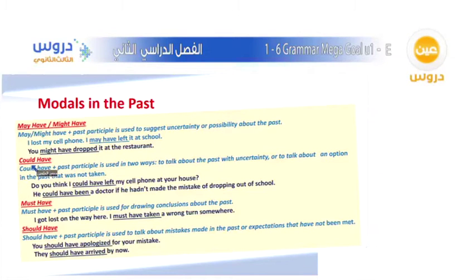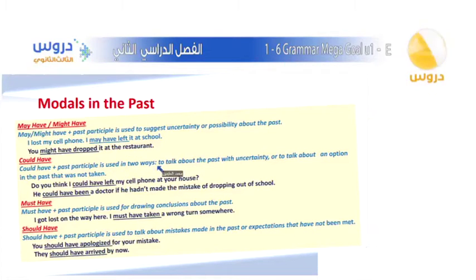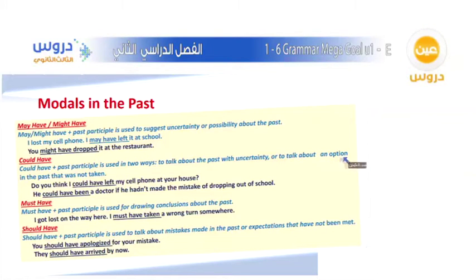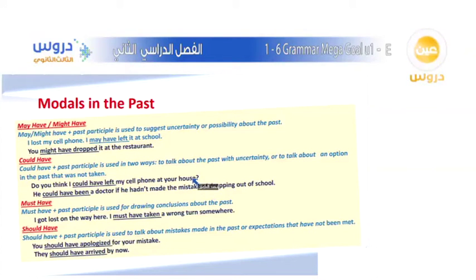Could have plus past participle is used in two ways. Number one: to talk about the past with uncertainty. For example: Do you think I could have left my cell phone at your house?